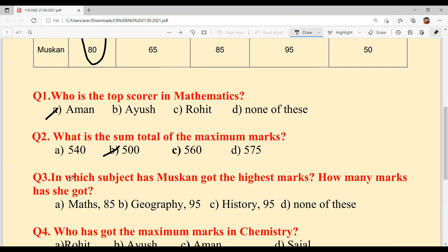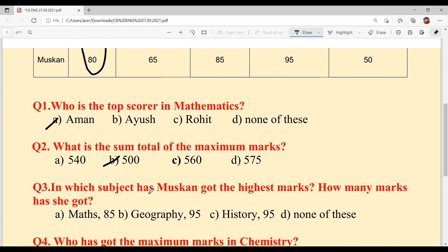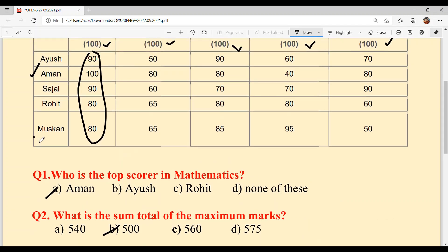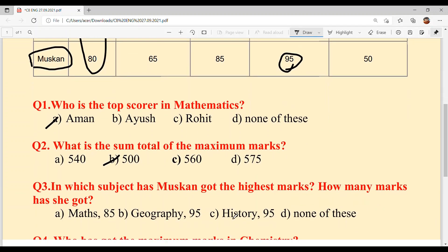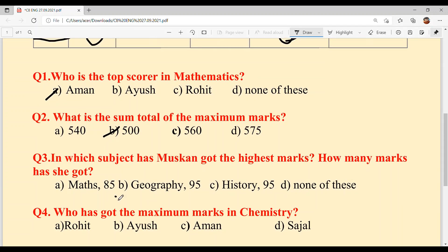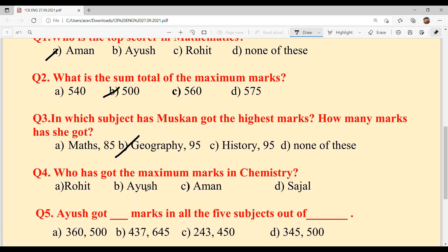Question 3: In which subject has Muskaan got the highest marks and how many marks has she got? Look at Muskaan's row - which subject has the highest marks? 80, 65, 85, 95... The highest is 95. Which subject? Geography. Option B, Geography, 95 marks.